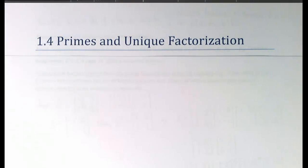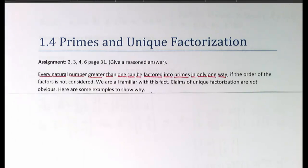This is the lecture for section 1.4 on primes and unique factorization. When we approach this topic for the first time, there's one question I almost always have to answer: Why do we have to prove that integers can be factored into primes in only one way?